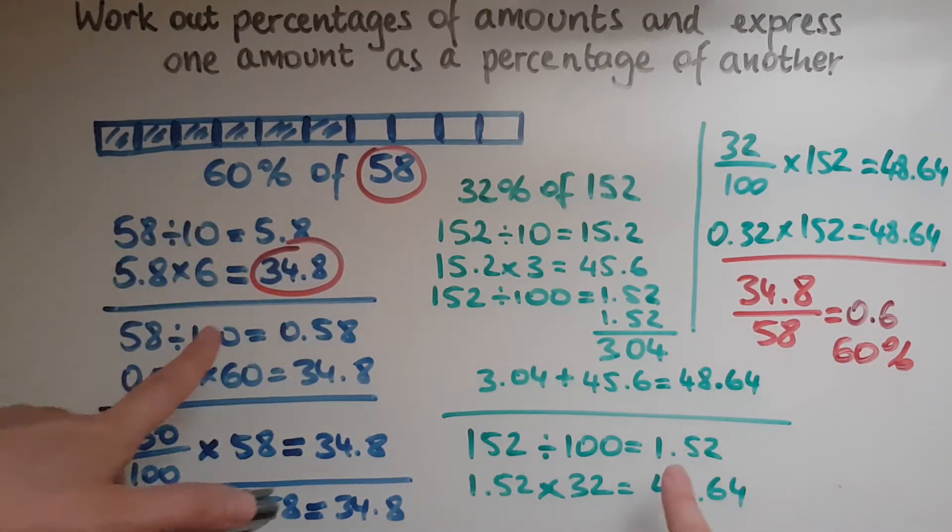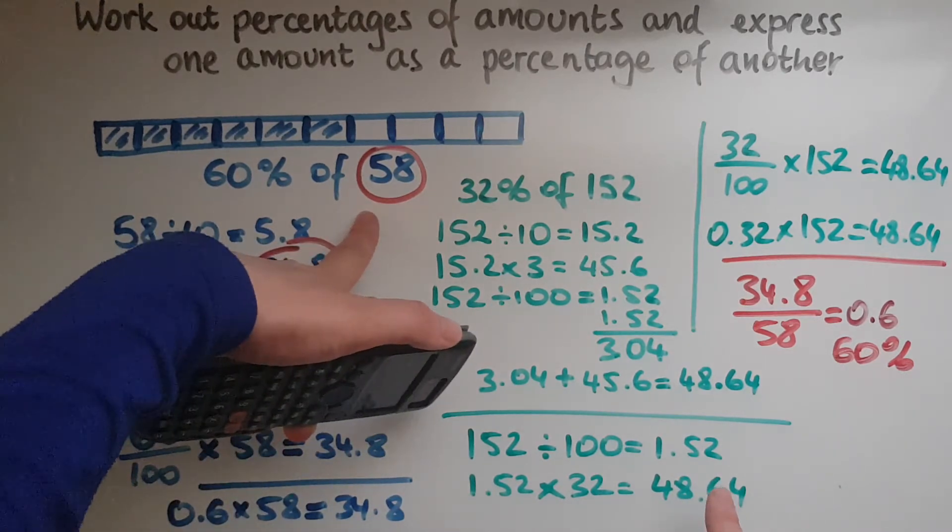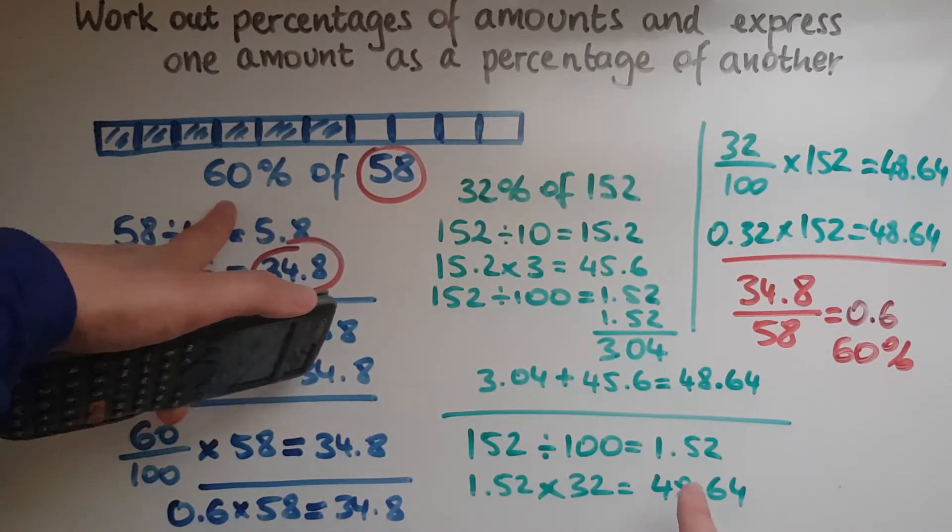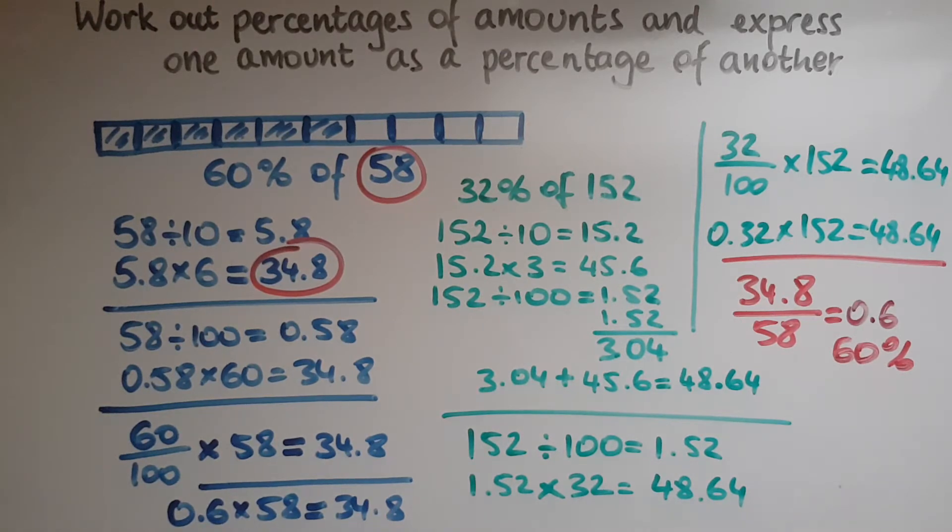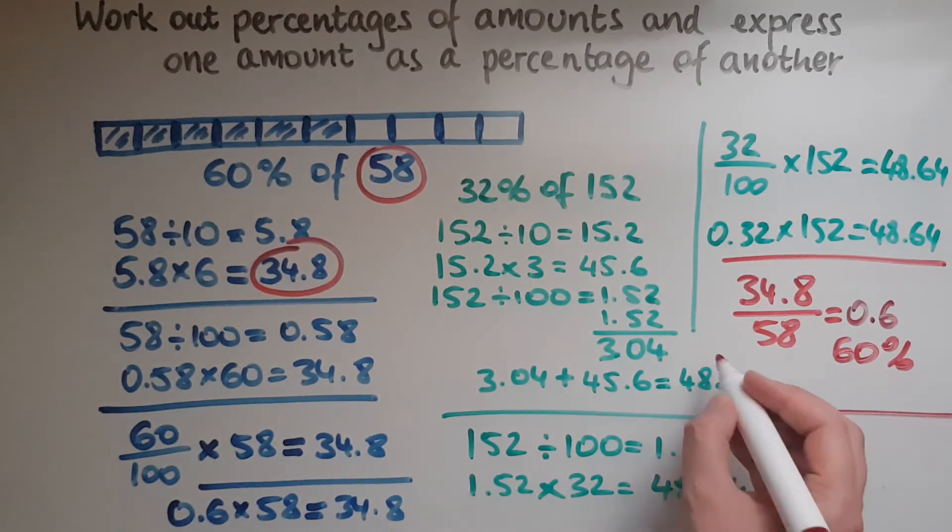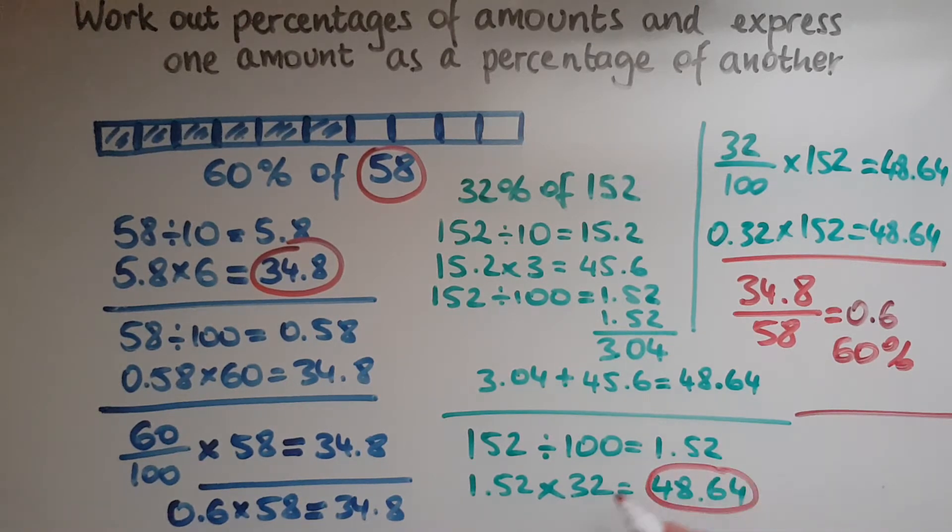So 34.8 out of 58 is 60% of 58. And the other example we had, the amount was 48.64.